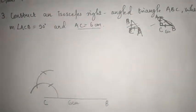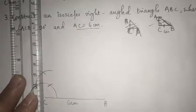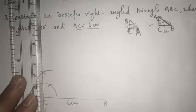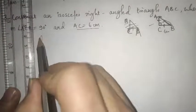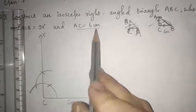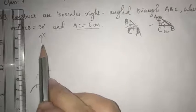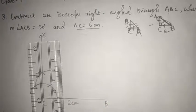So now join this point. Make a ray here. Okay, so this is our ray here. Let's give the name X. As now we have to make AC, right? So somewhere 6 centimeter we have to make AC here. So let us do it.